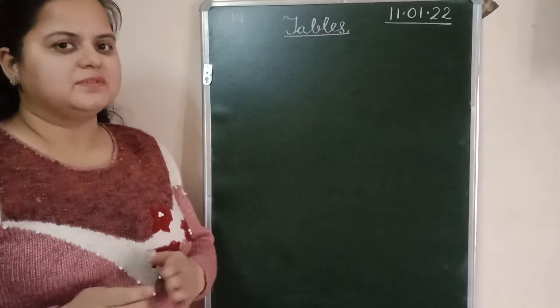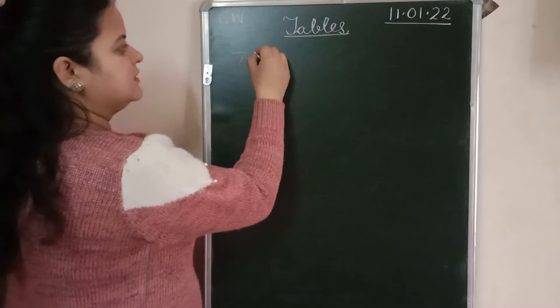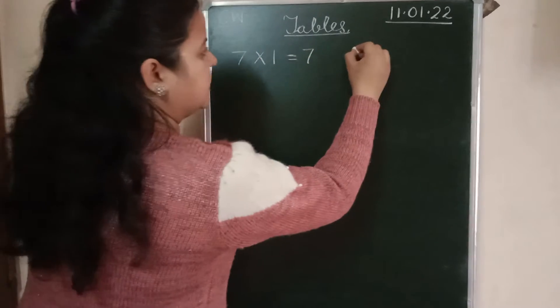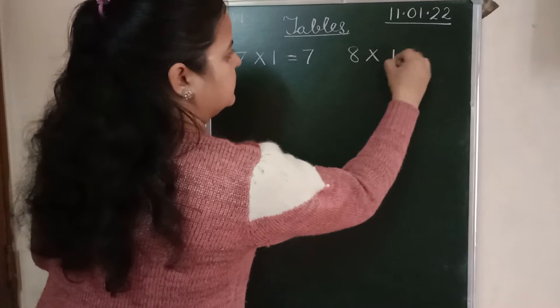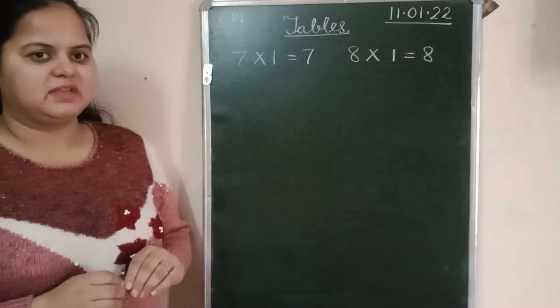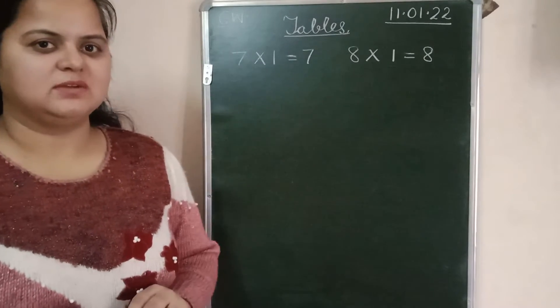Today, we will revise the tables of 7 and 8. So, the first is 7-1s are 7 and the second table is 8. 8-1s are 8. Now, let's start with table of 7. First of all, ma'am will speak the table and you have to repeat. Okay?